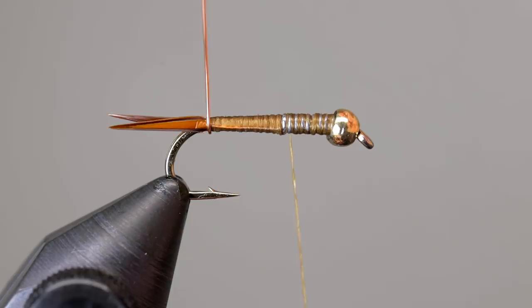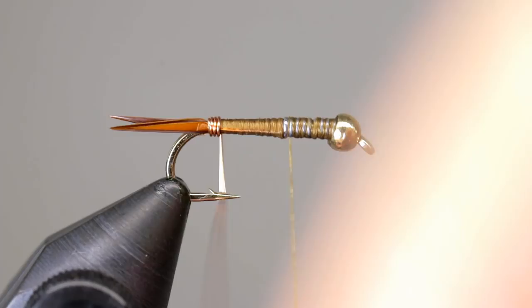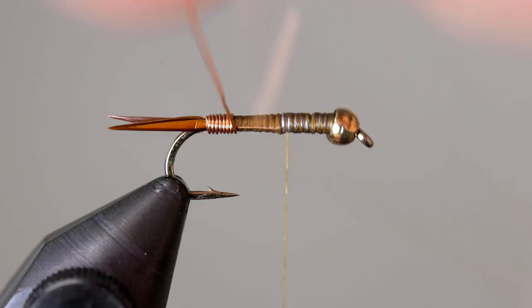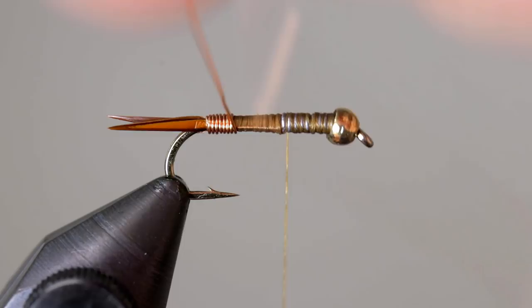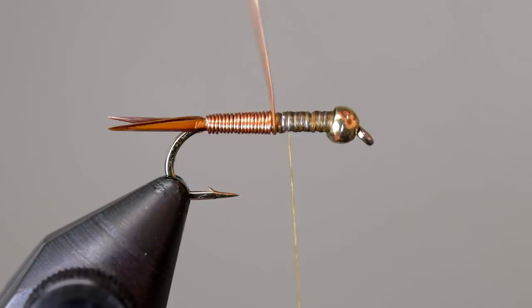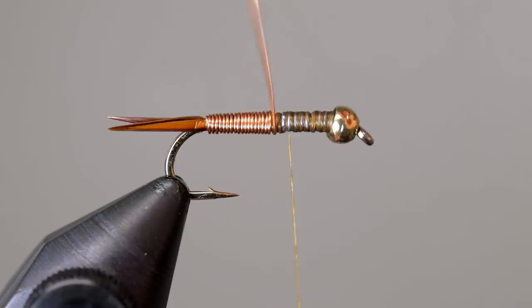Begin wrapping the copper wire forward, taking even touching wraps until about the two-thirds point. Using the rotary function on your vise can speed up this step, though I find I get much more consistent wire bodies by not using it. Once you reach the two-thirds point, place a couple of wraps on either side of the copper wire, and either cut or helicopter it off.